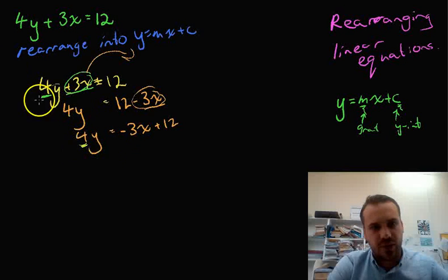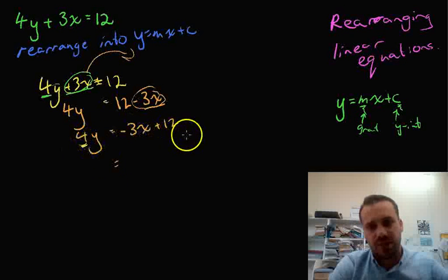So, we're going to need to divide everything by 4, because this is 4 times y. So, we're going to have to divide everything by 4, this, this, and this.